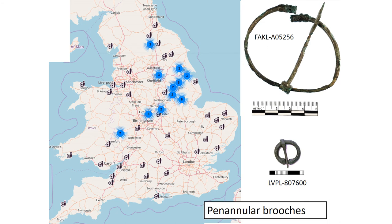Moving on to penannular brooches — those with an incomplete ring. These are also found in the Iron Age and Roman periods, which is extremely unusual for an early medieval brooch type. We have about a hundred on the database dated to the early medieval period. The distribution looks very different to any other brooch type we've seen — much more evenly scattered around the whole country, but none in the far south east as yet. The best source for all of them from any period is Anna Booth's PhD.